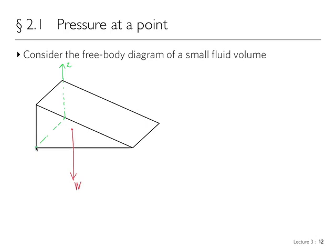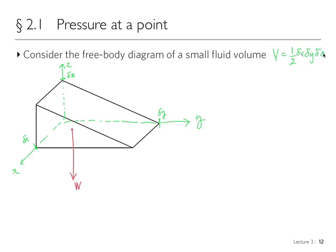We have Z, X, and Y axes. This is a small fluid volume with dimensions: this side is Delta Y, this distance is Delta X, and this distance is Delta Z. The volume of this wedge shape is one half of Delta X times Delta Y times Delta Z.